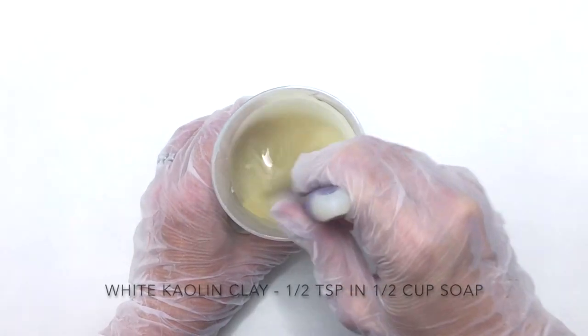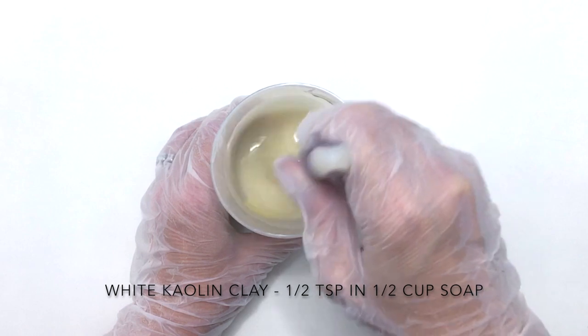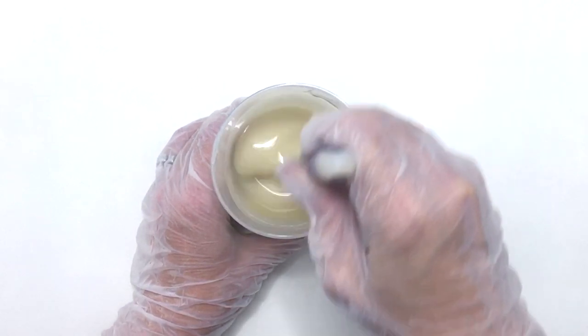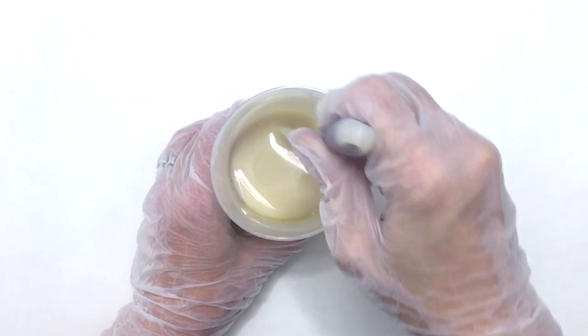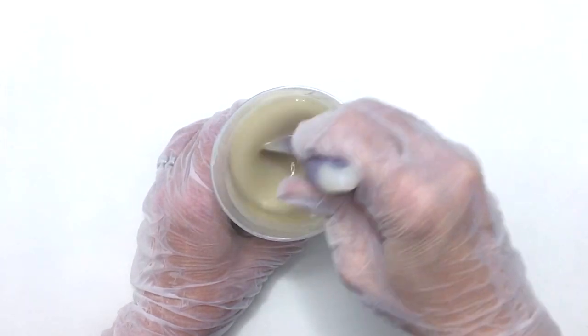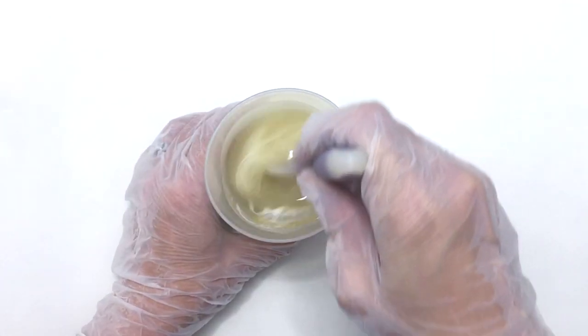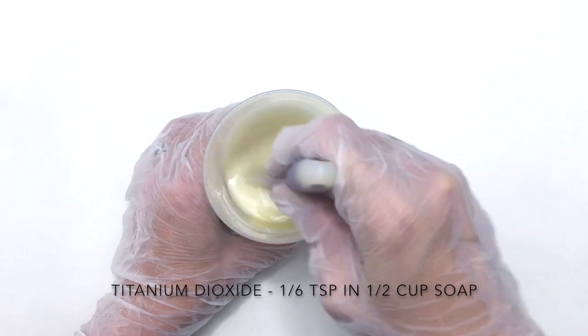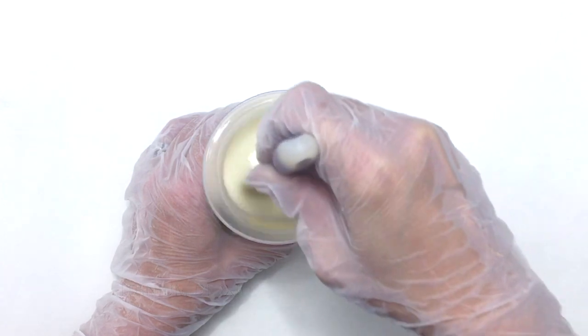I'm using a half a teaspoon of white kaolin clay in a half a cup of soap. For the titanium dioxide, I'm using one-sixth of a teaspoon and a half cup of soap. You can use more or less, it just depends on how you want it to look.